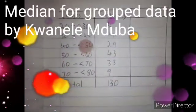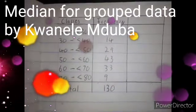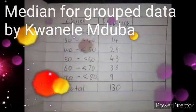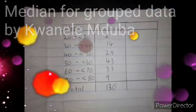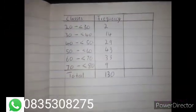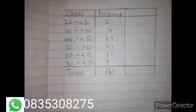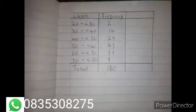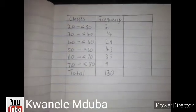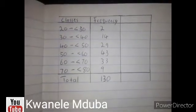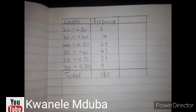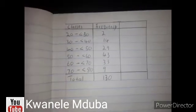Hi guys, welcome to another video. This is One Element Over. In this video, I'm going to show you how to calculate a median for grouped data. There's the table. Now the first step is to calculate the cumulative frequency, which is the 'less than'.